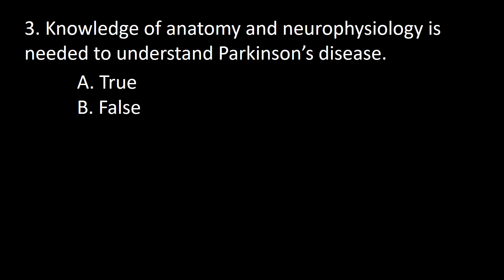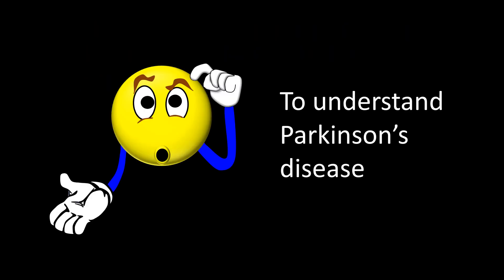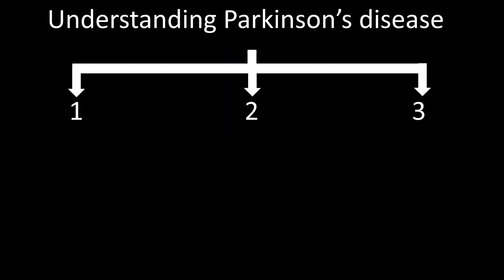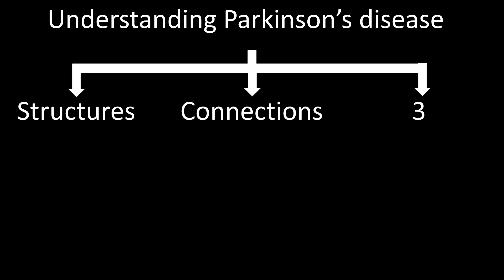Next question: Knowledge of anatomy and neurophysiology is needed to understand Parkinson's disease — A, true; B, false. To understand Parkinson's disease, we must have reasonable knowledge of three neurological elements: structures, connections, and pathways of the extrapyramidal system.